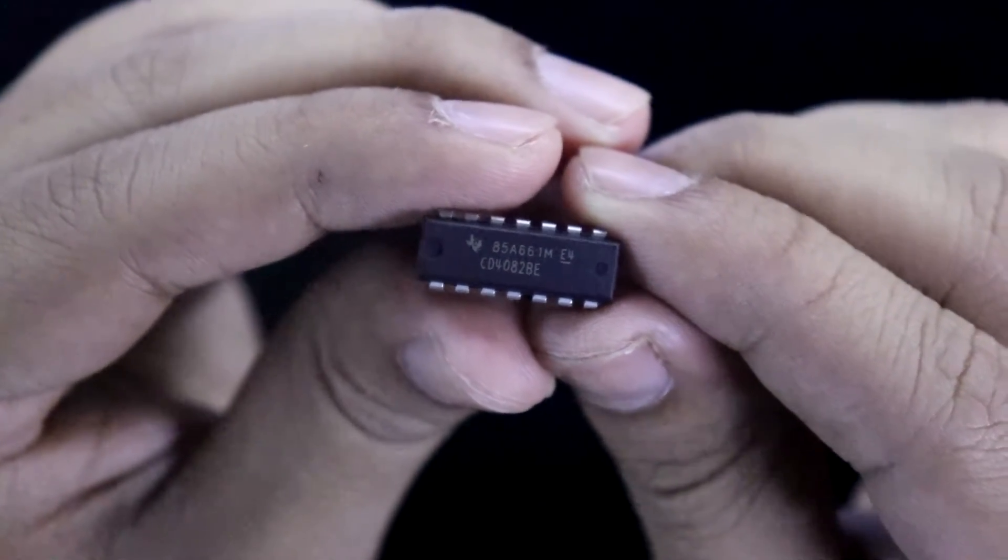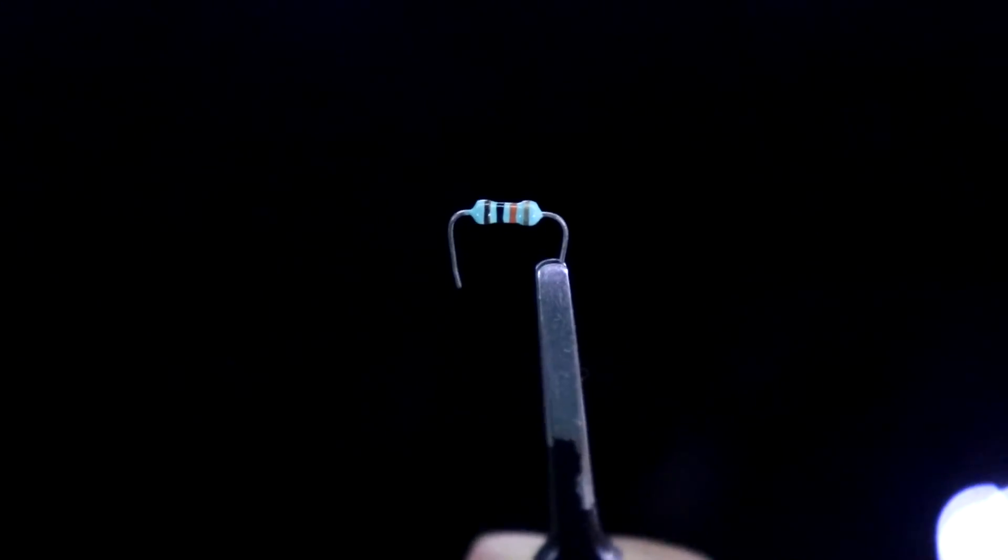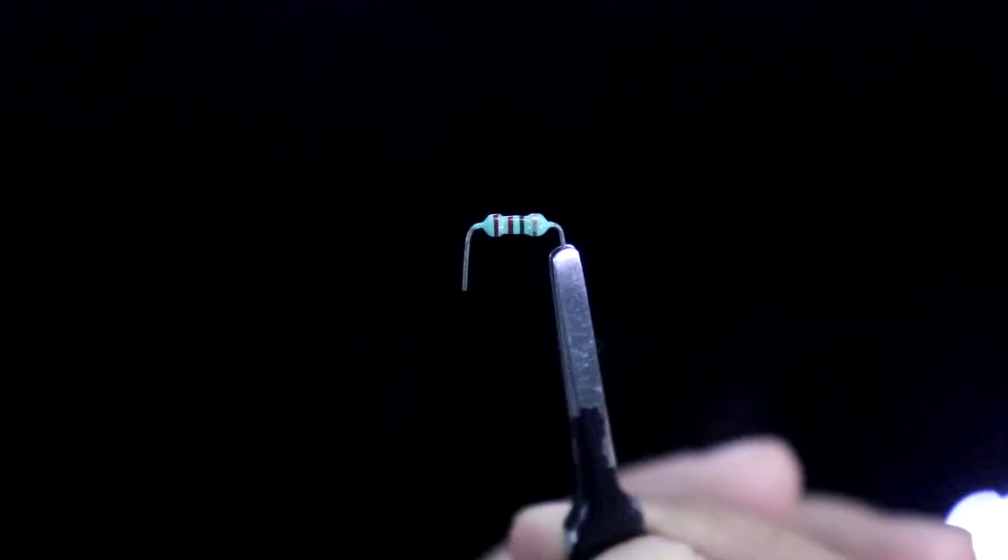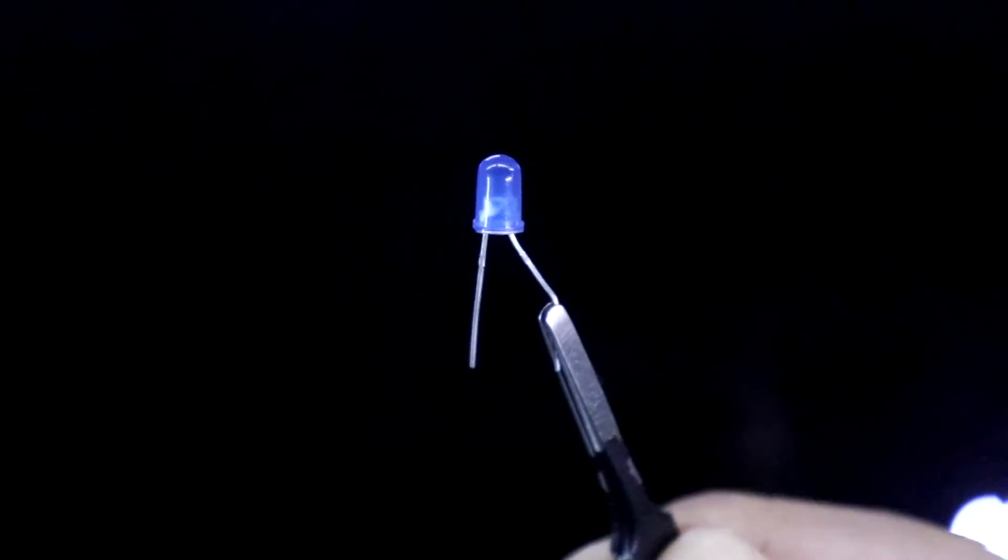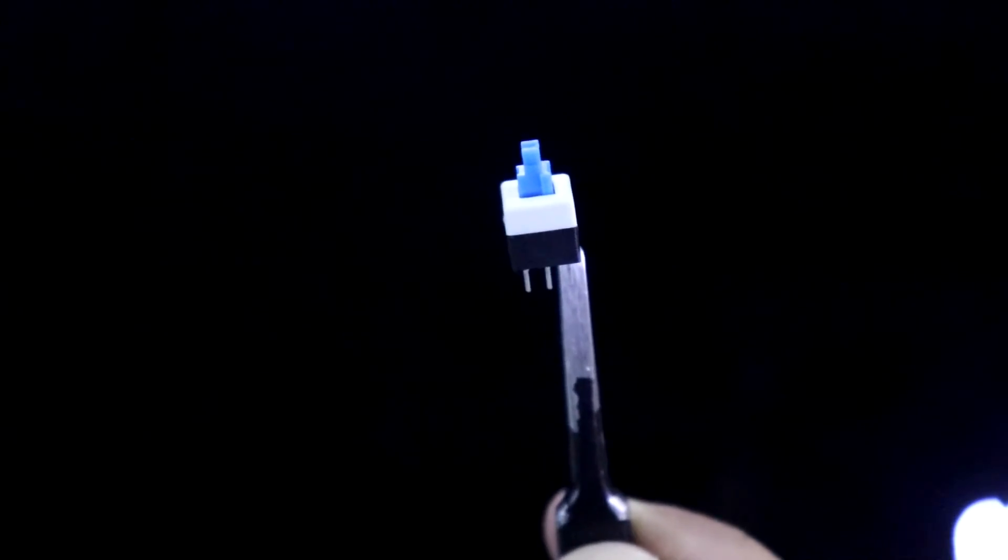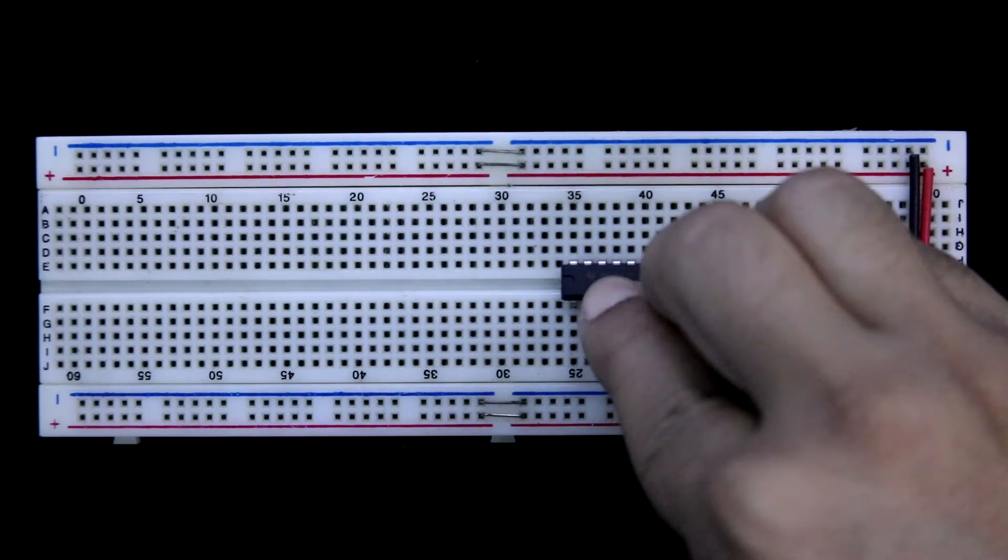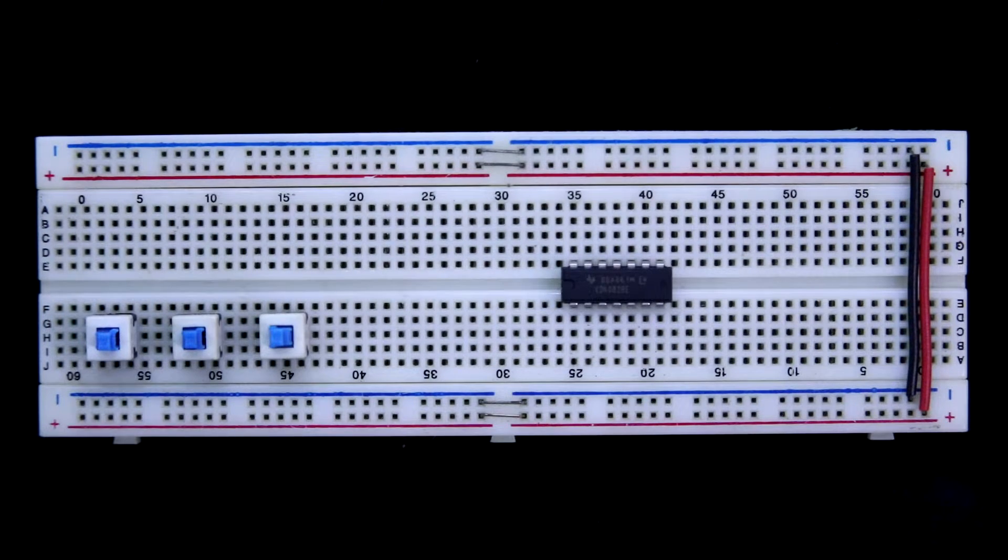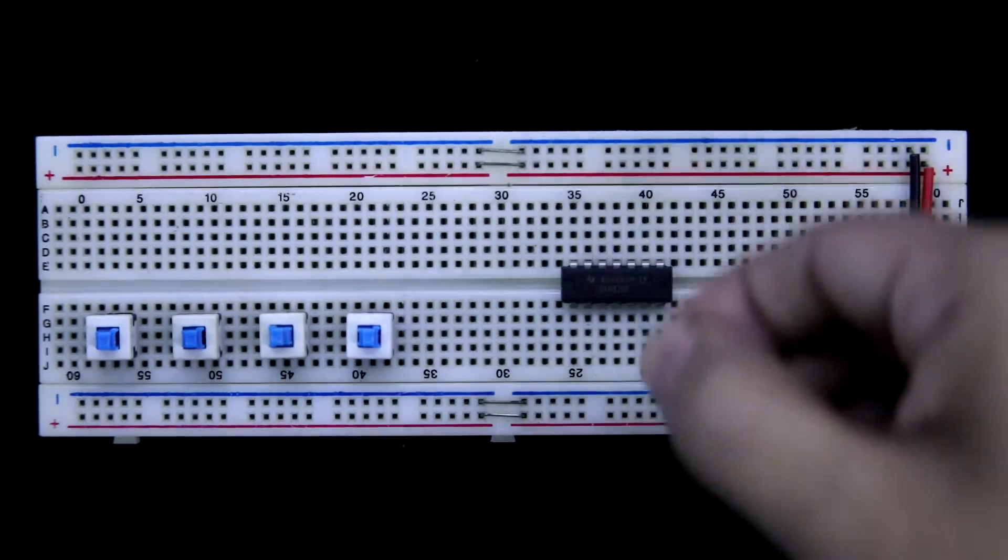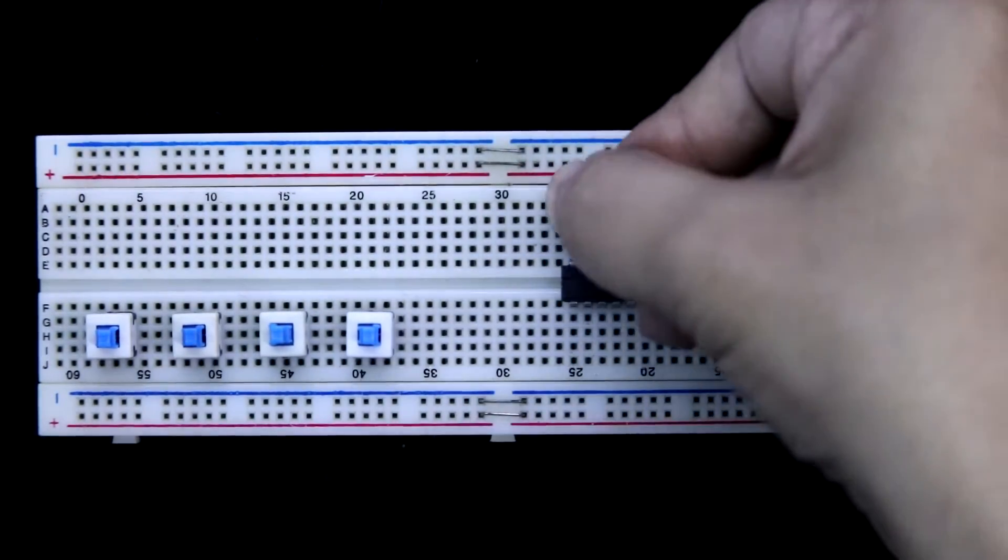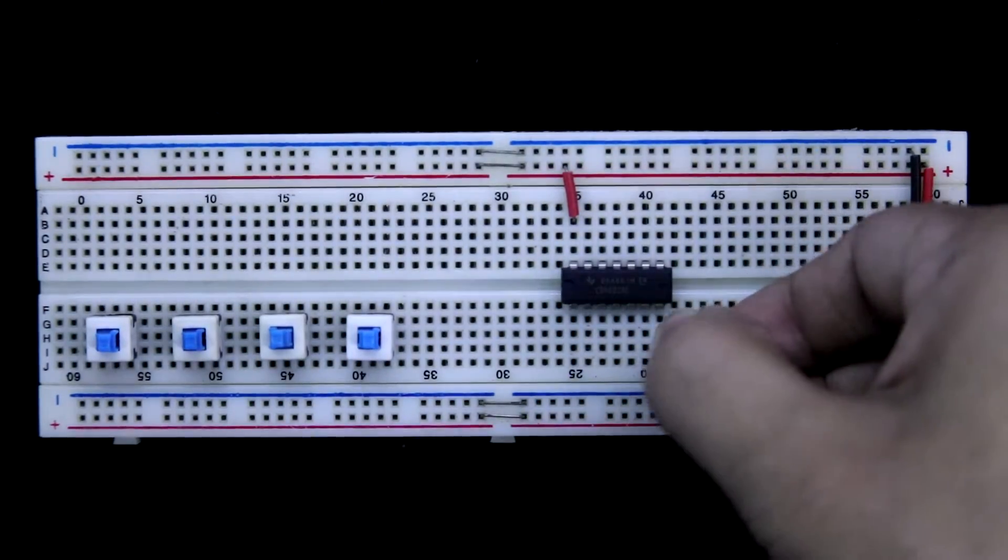This is the IC, CD4082, 10 kilo ohms resistor, 220 ohms resistor, LED and switch. Putting the IC, switch A, B, C and D. Pin 14 is connected to the positive rail. Pin 7 is connected to the ground.